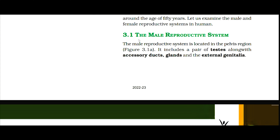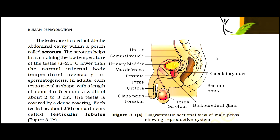3.1 The Male Reproductive System. The male reproductive system is located in the pelvis region, as given in figure 3.1a. It includes a pair of testes along with accessory ducts, glands, and the external genitalia. The testes are situated outside the abdominal cavity within a pouch called scrotum. The scrotum helps in maintaining the low temperature of the testes, which is 2–2.5 degrees Celsius lower than the normal internal body temperature, necessary for spermatogenesis.